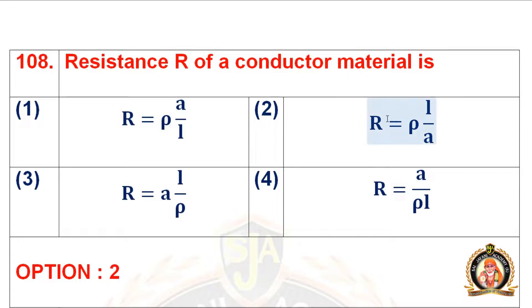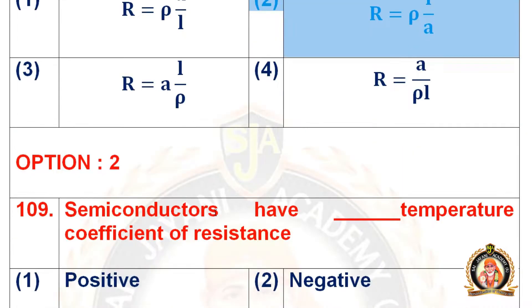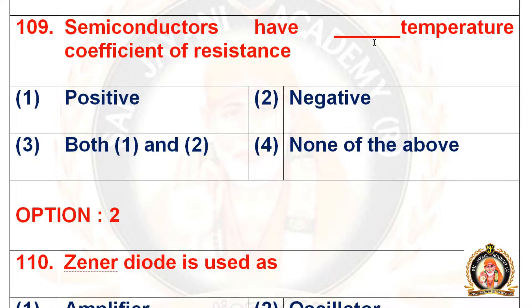Question 108: The resistance R of a conductor material is. Options are R = ρA/L, R = ρL/A, R = AL/ρ, and R = A/ρL. The right option is the second option, that is R = ρL/A.